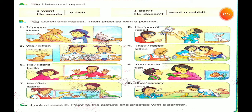Let's see these pictures. Number one — I, puppy, kitten. We can say: I want a puppy. I don't want a kitten. Number two — he, parrot, rabbit. He wants a parrot. He doesn't want a rabbit. Number three — we want kittens. We don't want a puppy. Number four — they, rabbit, kitten. They want a rabbit. They don't want a kitten.